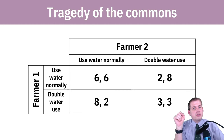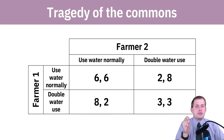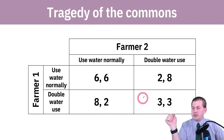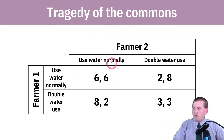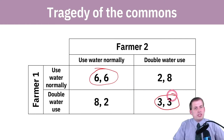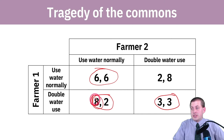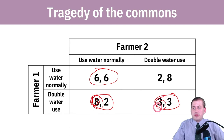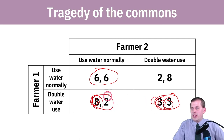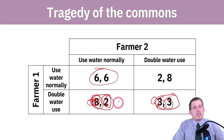We can draw this out as a game: two farmers in California choose to either use the normal amount of water or double their use. If both use water normally, each gets 6 utils. If both double, each only gets 3. If one doubles while the other doesn't, the one doubling gets 8 utils while the normal user only gets 2, because they're running out of water.